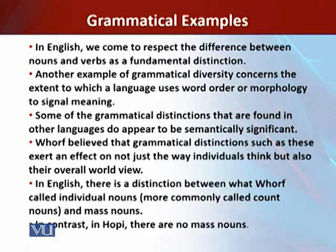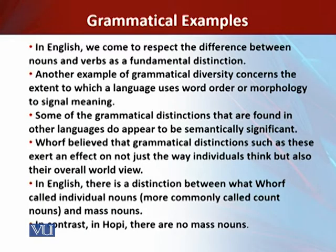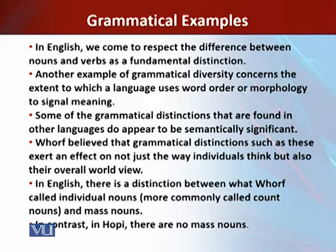Yet Worf asked: why then do we classify temporary events such as 'lightning' and 'spark' as nouns? And why are 'dwell,' 'persist,' and 'continue' verbs? In Hopi, lightning is a verb because events of brief duration must be a verb. Worf also commented that not only in Hopi but also in Nootka, a language spoken on Vancouver Island, all words seem to be treated as verbs. This is just one indication of how grammatical characteristics vary from language to language.